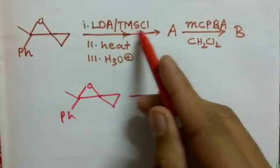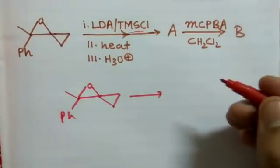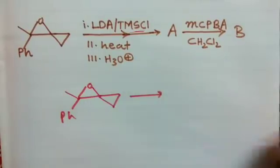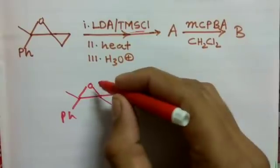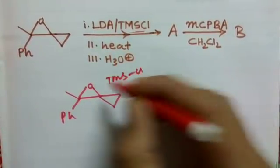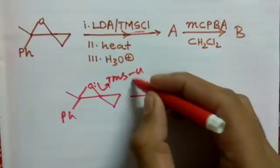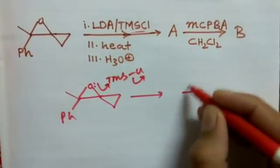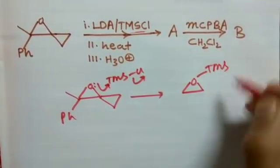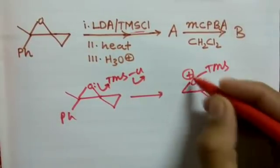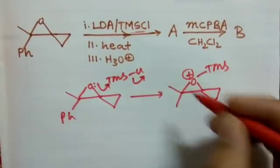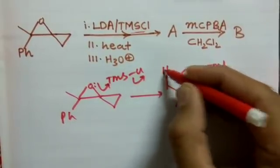Now let us see what this TMS-Cl, trimethylsilyl chloride, can do. We have oxygen which has a lone pair, and we know that oxygen has very high binding tendency with trimethylsilyl chloride. Definitely if you have TMS-Cl, the oxygen lone pair will attack on that and it will form O-TMS. That will induce a positive charge over there.